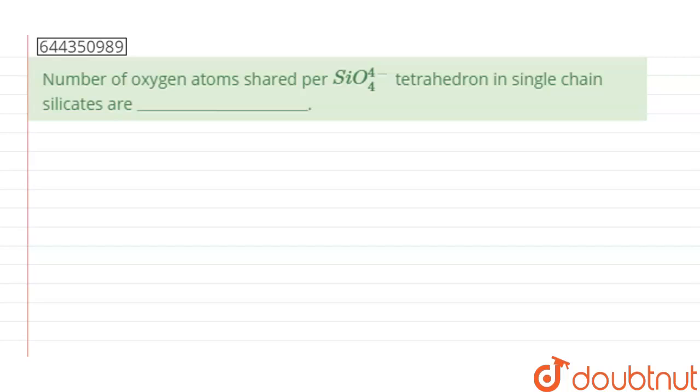Hello guys, so the given question says: number of oxygen atoms shared per SiO4^4- tetrahedron in single chain silicates.